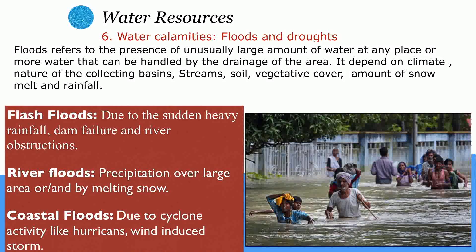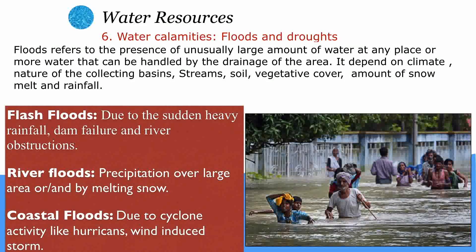Flash floods occur due to sudden heavy rainfall, dam failure, or river obstructions, causing a sudden rise in water level within a very short period of time. River floods happen every year at the banks of bigger rivers; heavy rainfall causes the water level to rise and cover nearby areas, or they can be caused by melting snow. Coastal floods occur due to cyclone activities like hurricanes, winds, and induced storms, affecting only coastal regions; an example is a tsunami.